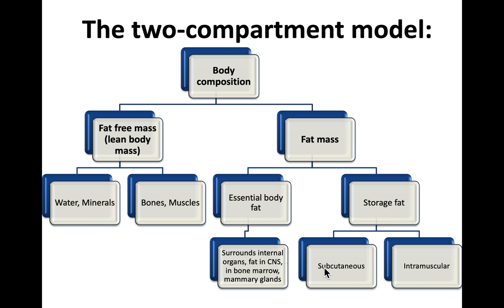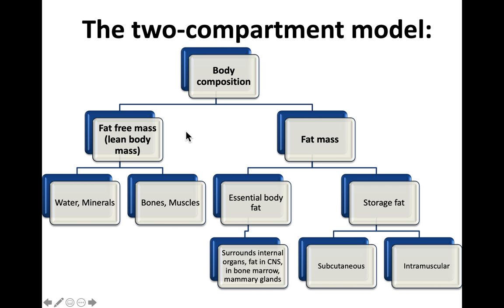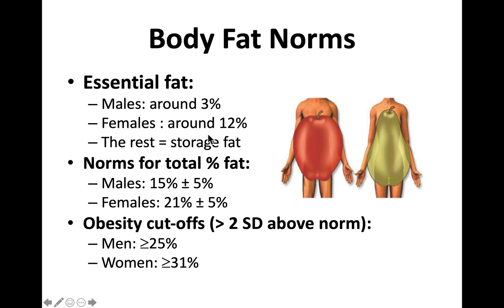You can take body composition down to further subcategories, but for today we're just going to keep to what's called two-compartment models. Fat-free mass, or lean body mass, is made up of water, minerals, bones, and muscles — pretty much everything that's not fat — versus the fat mass. Fat mass can be subcategorized down to essential fat and storage fat, but this method of analysis is only going to tell us fat mass versus fat-free mass.